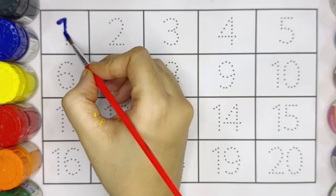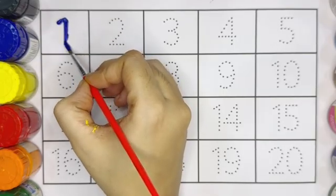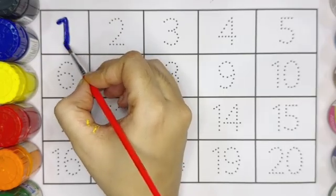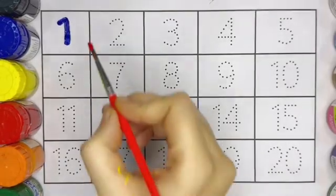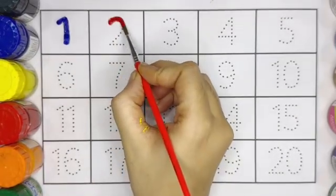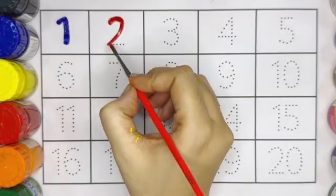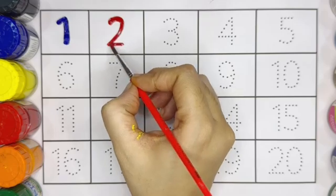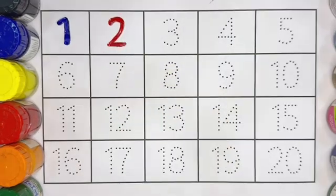1, number 1, blue color. Number 1 is with blue color. This is number 2, number 2 with red color.